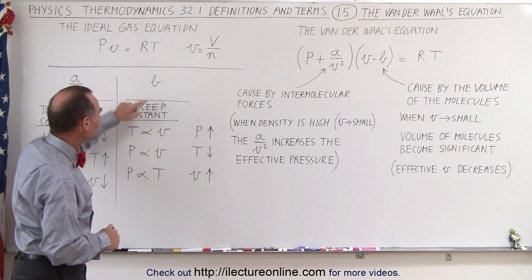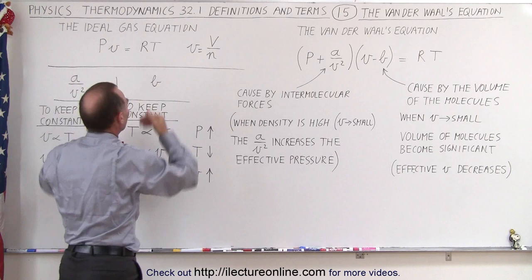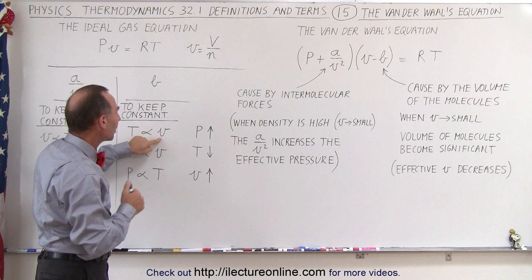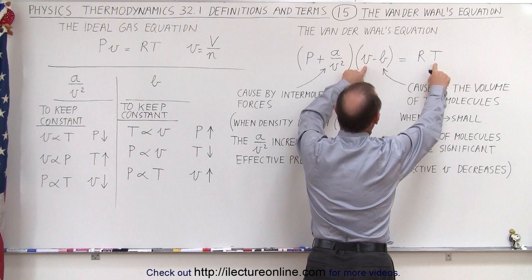So for example, when we take a look at v minus b, how does it affect the ideal gas equation — what is now different? Let's say we want to keep the temperature and the volume constant. What will that do to the pressure then?